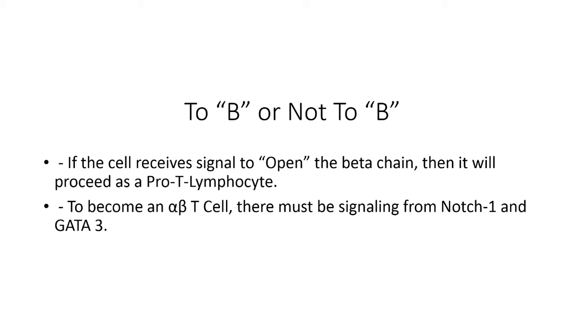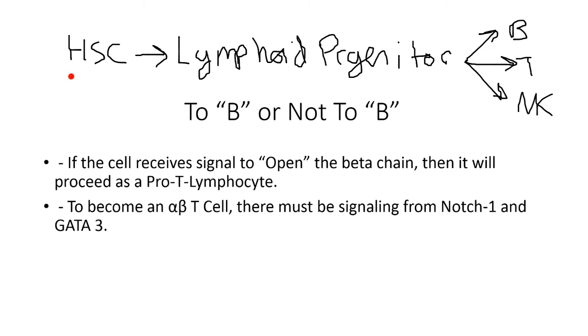The question for hematopoietic stem cell is do I want to become lymphoid or myeloid? And then once it becomes lymphoid progenitor, it decides whether to become a T or a B, so to be or not to be. It could also become a natural killer cell.